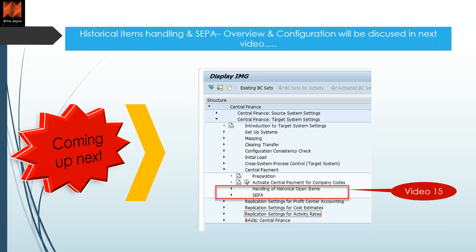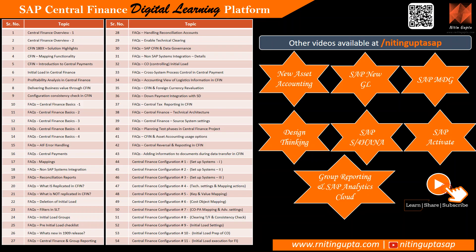For historical open items there is a special process and program which we will cover in the next video, which is video number 15. There are now 14 configuration videos available, and around 43 videos available for central finance basic knowledge. The CSPC video I referenced is video number 33 — cross system process control in central payment — and it is important that you watch that video as well before this one. Don't forget to like, share, and subscribe, and please put any questions in the video comments.